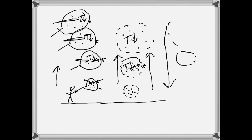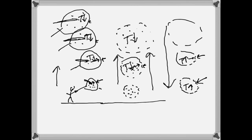The opposite is also true: if we push air downward, the air starts to contract because the pressure outside increases relative to the pressure inside. The air molecules squeeze together, there's more molecular collision, more energy exchange, and so the temperature inside the parcel begins to increase. This is called adiabatic contraction, or adiabatic heating.